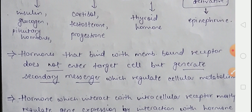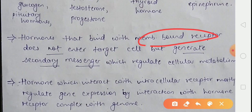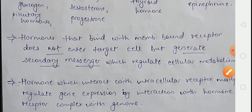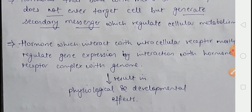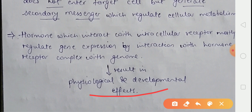Hormones that bind with the membrane-bound receptor do not enter the target cell, but instead generate a secondary messenger which regulates the cellular metabolism. In contrast, hormones that interact with intracellular receptors mostly regulate gene expression by interaction of the hormone-receptor complex with the genome, producing physiological and developmental effects.